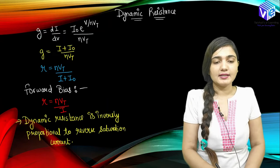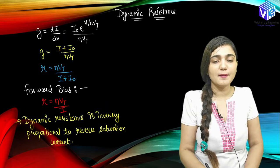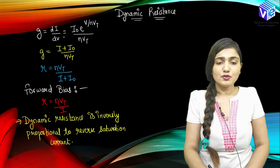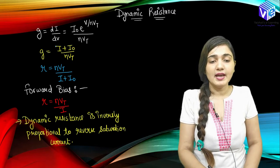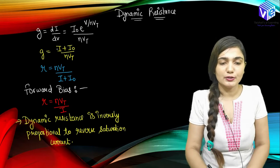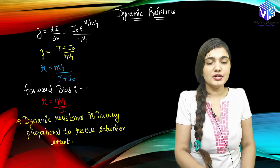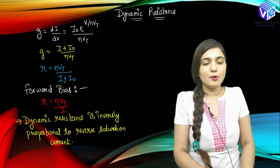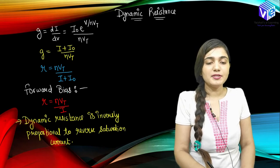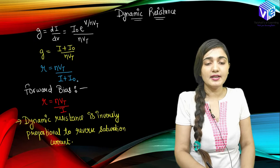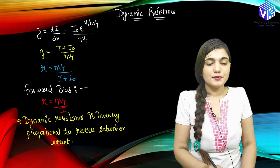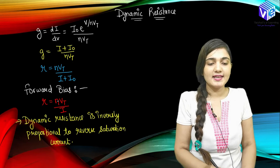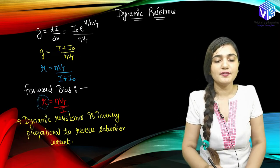G is the conductance, which equals dI/dV = I0 · e^(V/ηVT) / ηVT. This can be represented as (I + I0) / ηVT. Since R = 1/G, taking the reciprocal gives R = ηVT / (I + I0). When considering forward bias current, I0 is very small and we neglect it, so R = ηVT / I. Therefore dynamic resistance is inversely proportional to the current I.